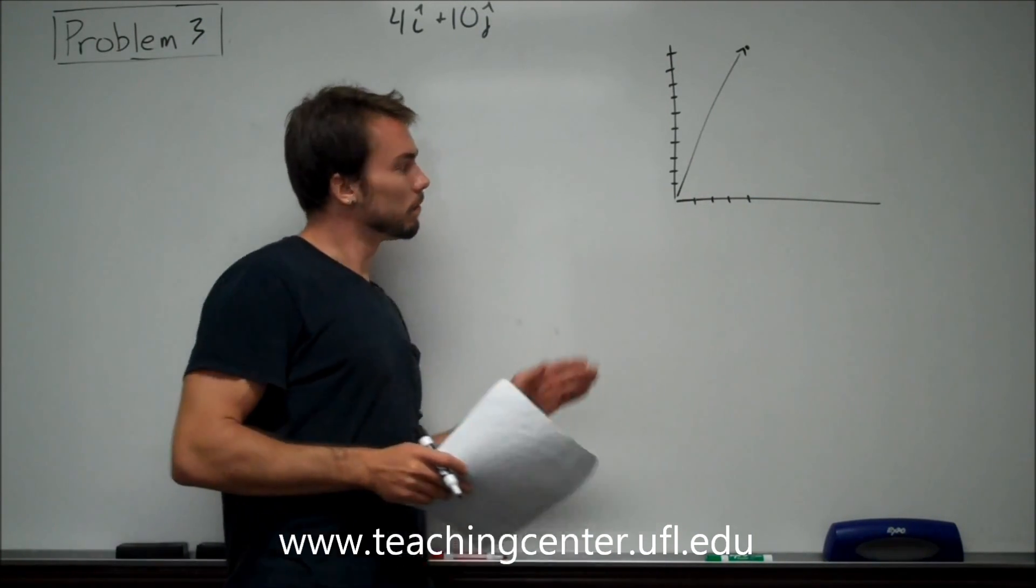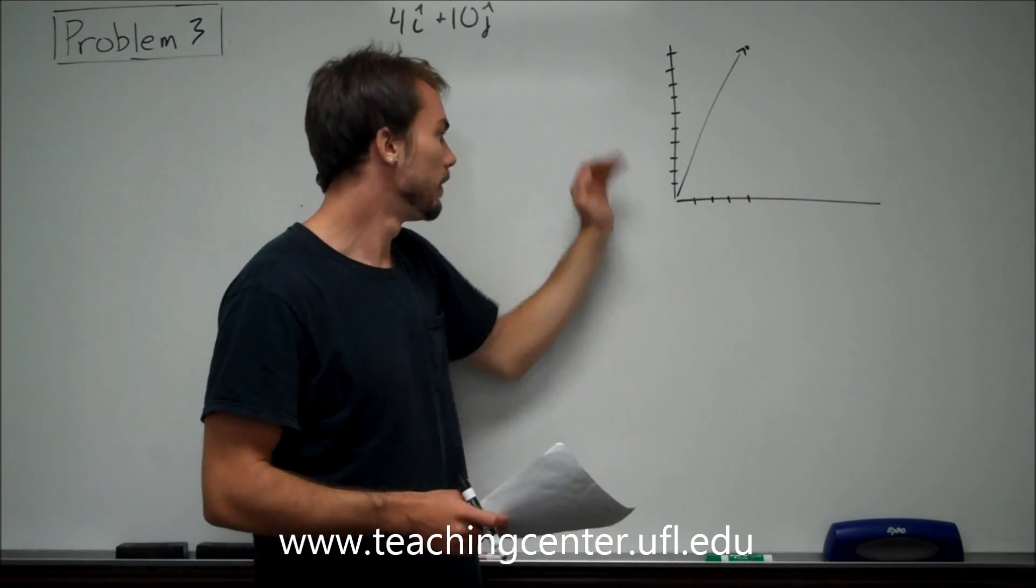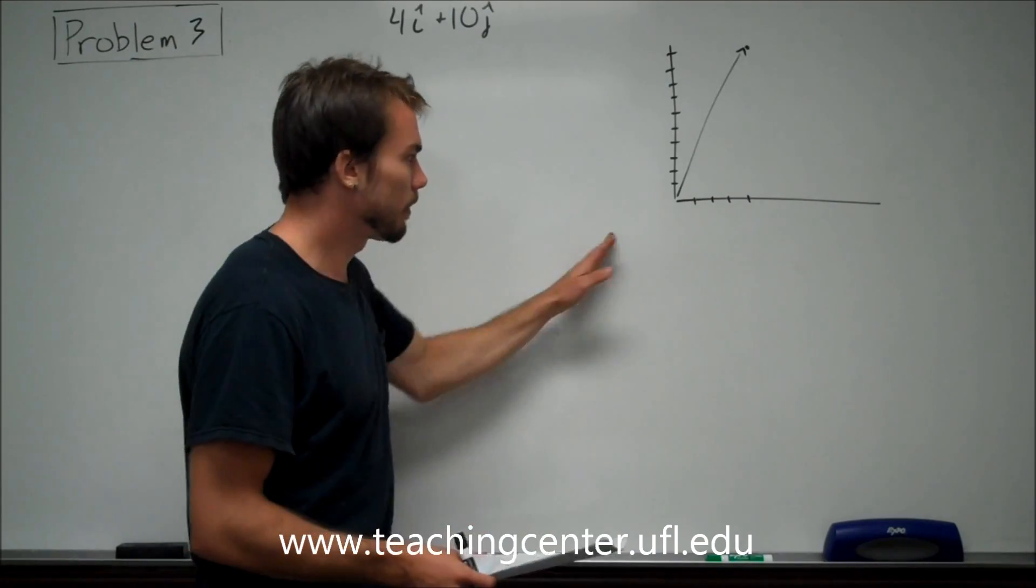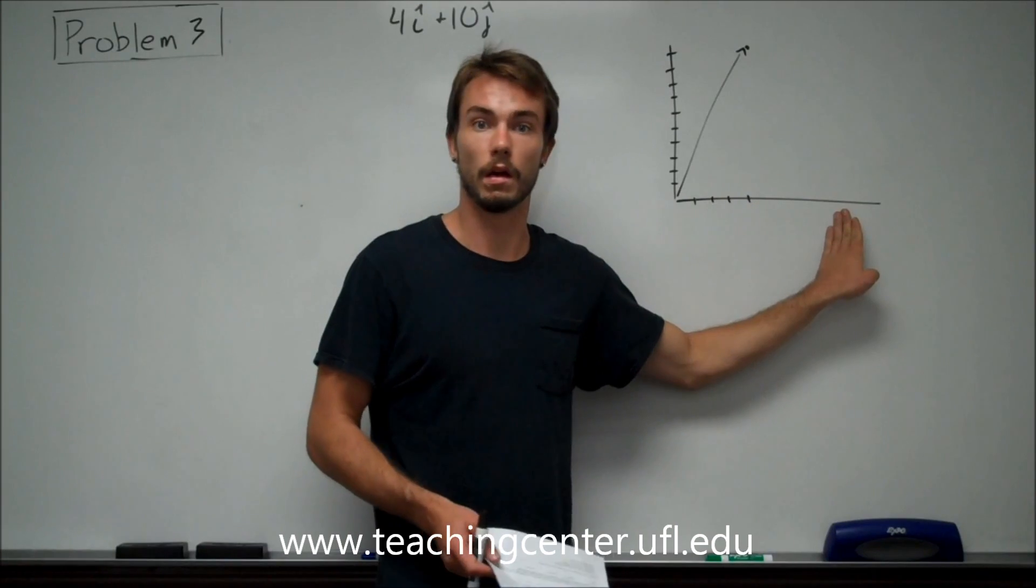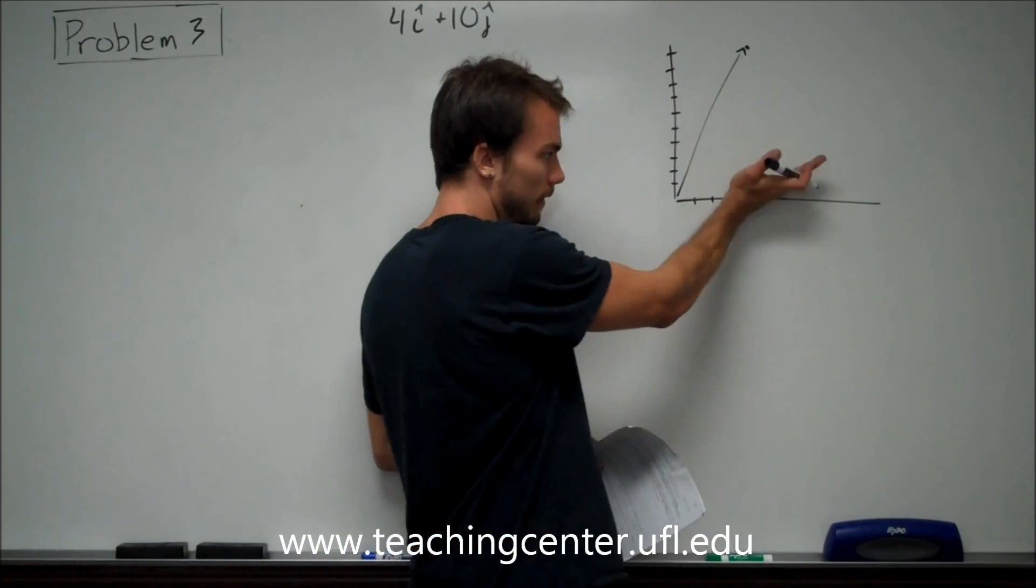So they're rotating it about the origin, either this way or that way. Now, if the X component is doubled, they didn't say anything about a negative, so you can assume it's going to be 8 over here. 4 times 2 is 8. So I'm going to assume it's rotating this way.